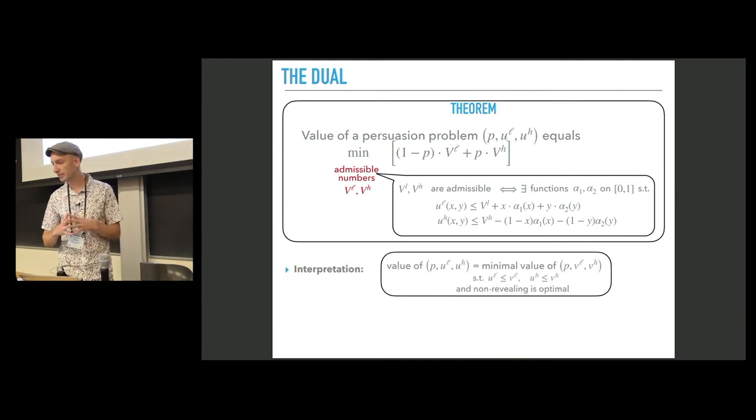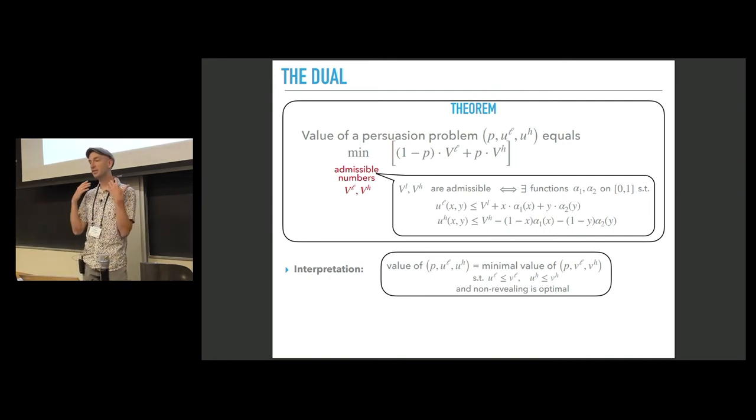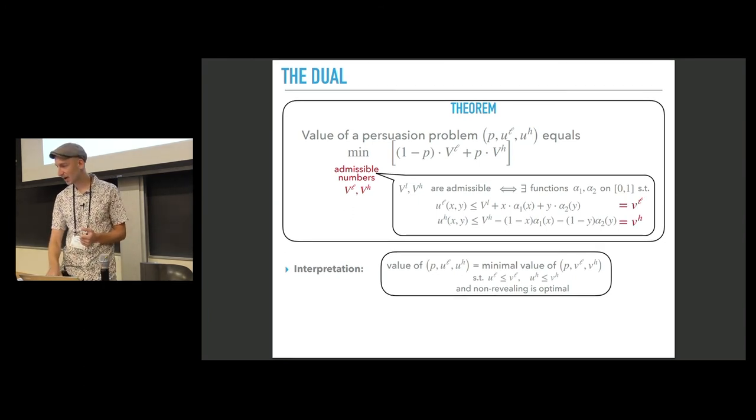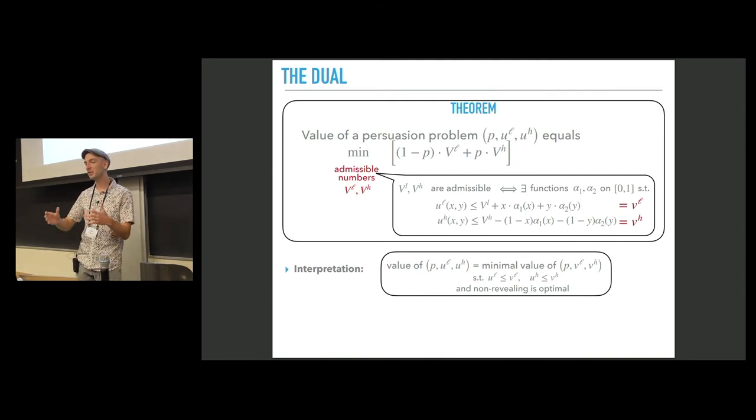Now I want to give you an intuitive interpretation of these optimization problems. It turns out that you can think of it the following way. The value of our persuasion problem with utility functions UL and UH is equal to the minimum of the values of persuasion problem with utility functions VL and VH such that these utility functions VL and VH are above UL and UH.